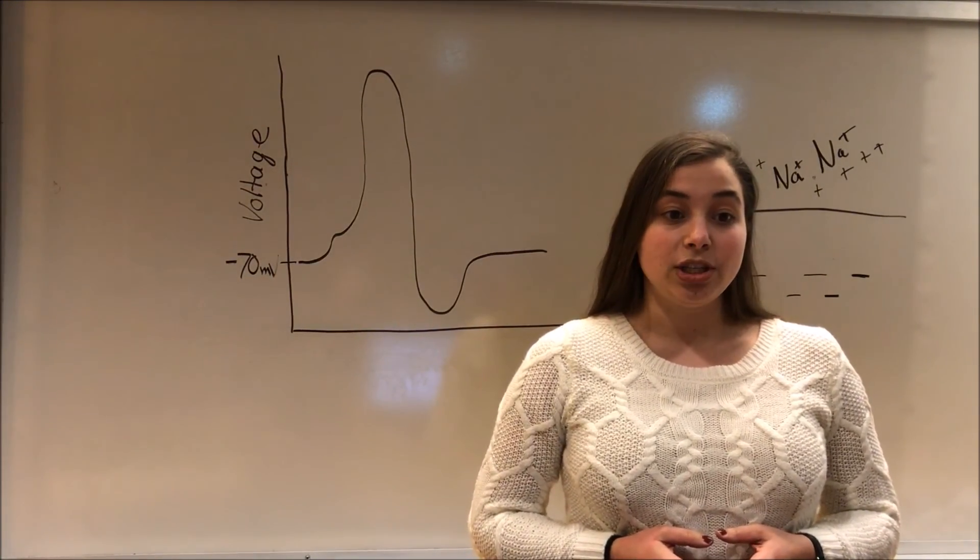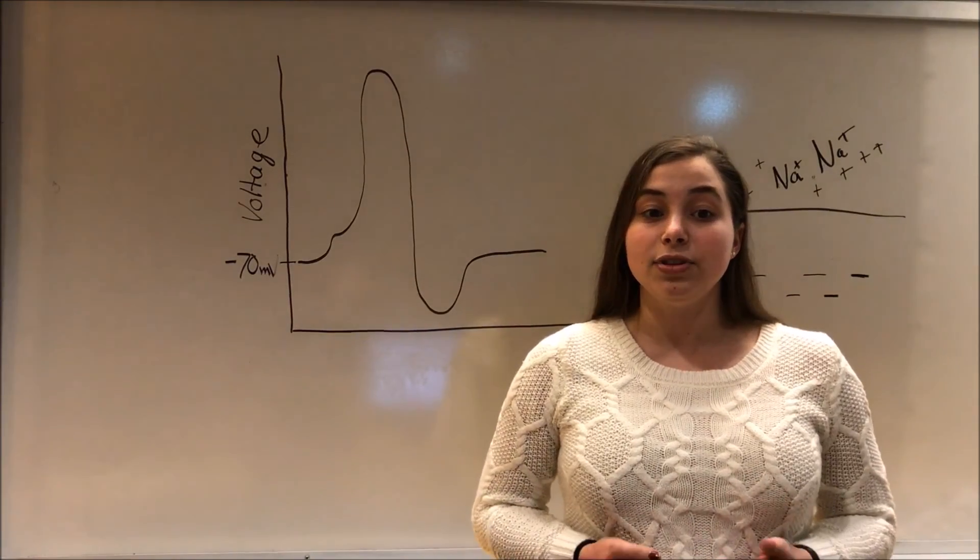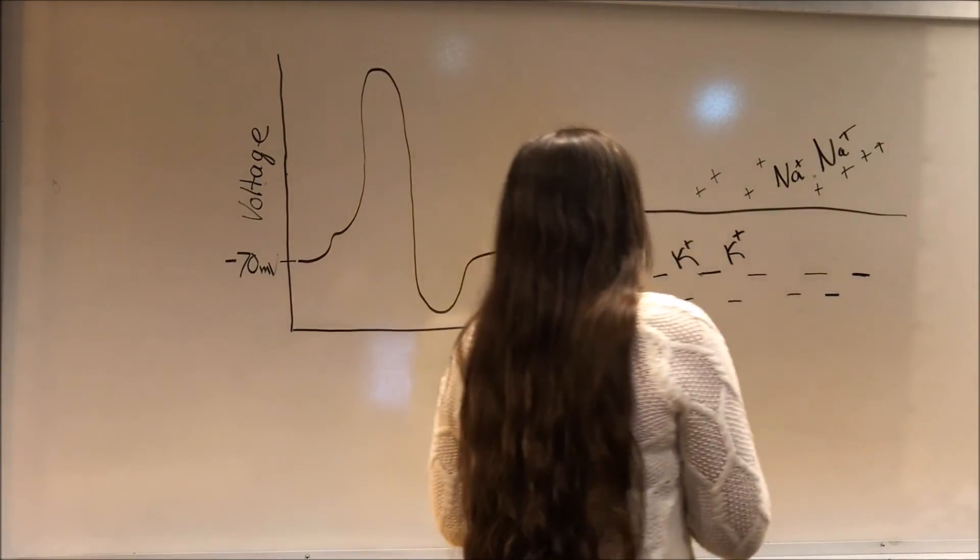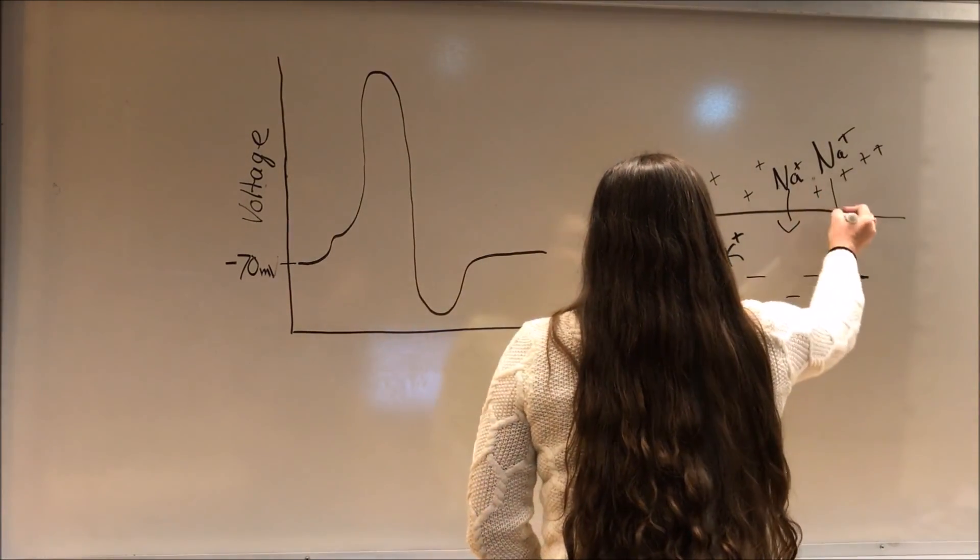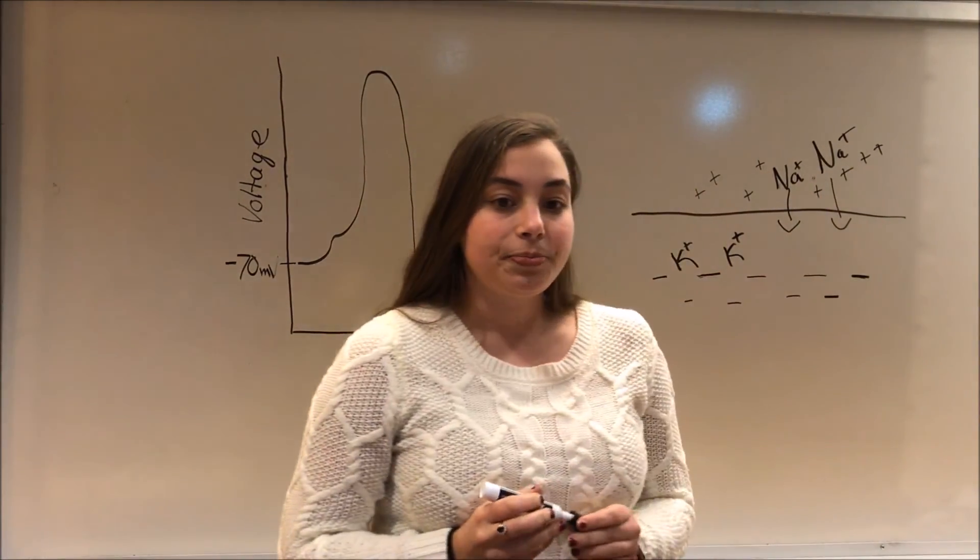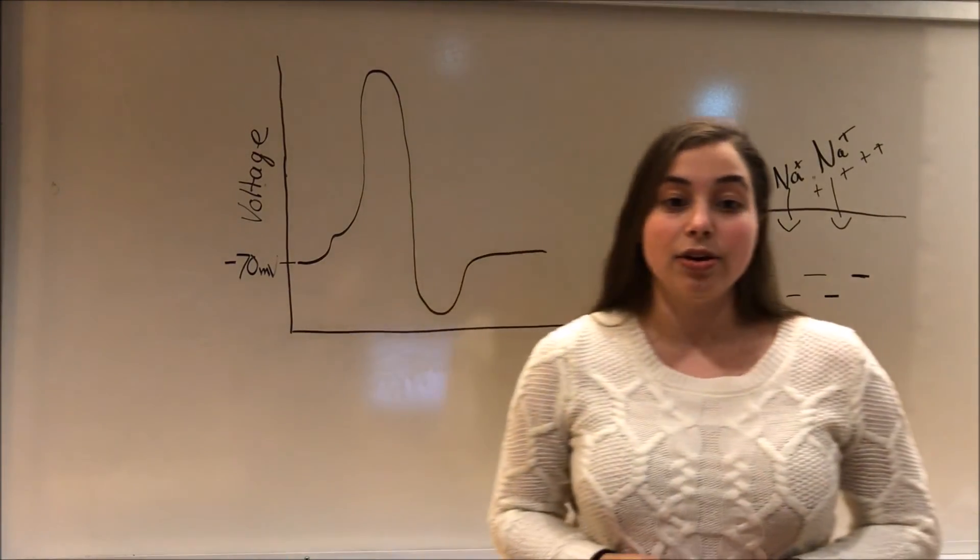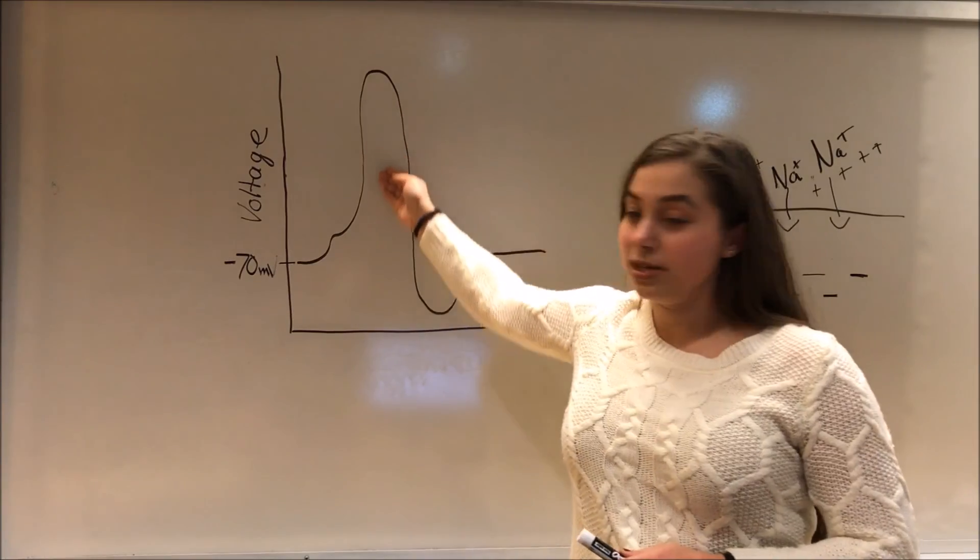Once threshold is reached, ion channels in the membranes that are sensitive to the voltage will open up, which will allow sodium ions to flow in. Since these are positive ions, the membrane potential in the side of the cell continues to become more positive, as you can see here.